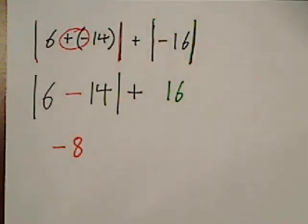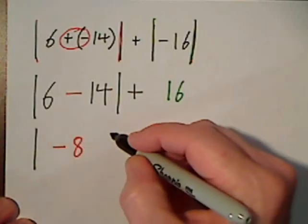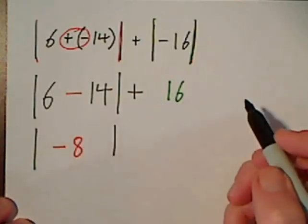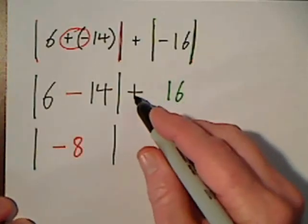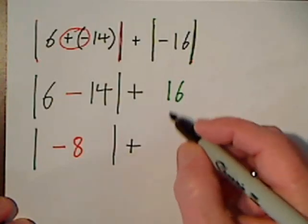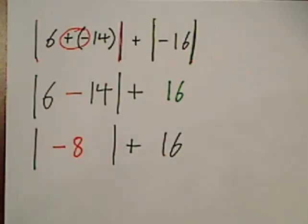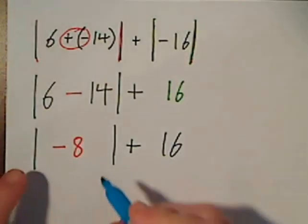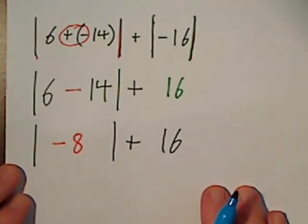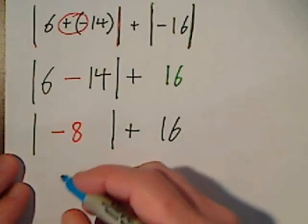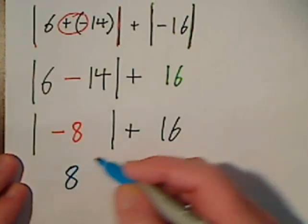But that's still within the absolute value. I'll bring down whatever else I haven't used, so I haven't used that sign or the 16, and then we will take the absolute value of negative 8. Let me slide this up a little bit. That'll yield a positive 8.